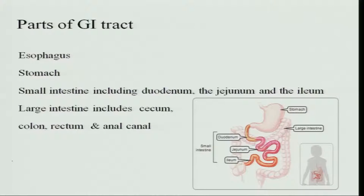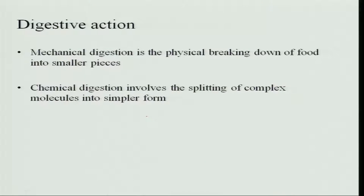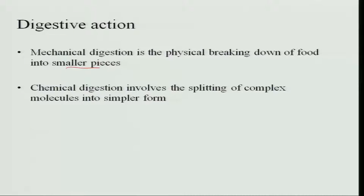Let us revise the parts of the gastrointestinal tract. It has the esophagus, stomach, then the small intestine including its three parts — duodenum, jejunum, and ileum — and the large intestine including the cecum, colon, rectum, and anal canal. Digestion involves mechanical digestion, where we chew food and break it into smaller pieces, and chemical digestion, which involves splitting complex molecules into simpler forms.